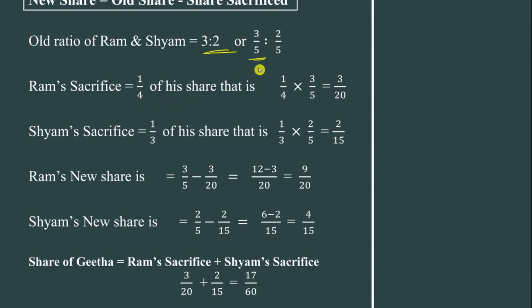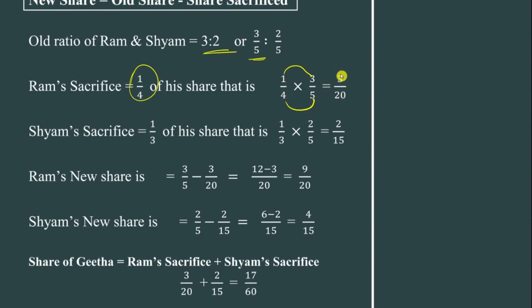If you multiply 1/4 and 3/5 — numerator by numerator, denominator by denominator — that is 3 by 20, which equals 3/20. This is Ram's sacrifice. Ram's sacrifice is 3/20. So the share sacrifice for Ram is 3/20.